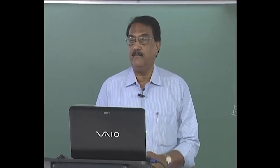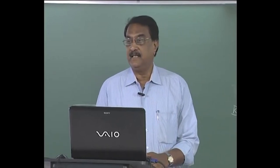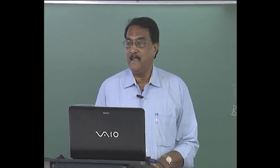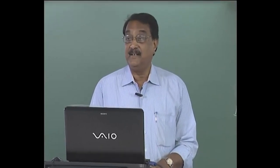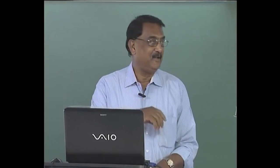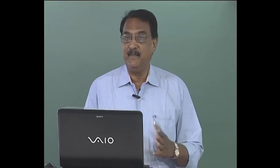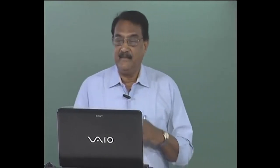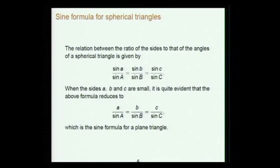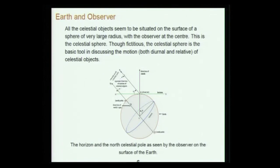Even about 40 or 50 years back, Pancharatnam, using the properties of these things, could get some very important result in optics by analyzing light rays related to a spherical triangle, and got a new result called the Pancharatnam phase. It was quite a simple but very elegant and geometrically significant result. Of course, we are not interested in those things; we are interested in astronomy.